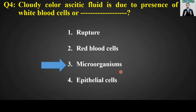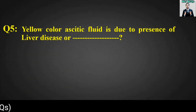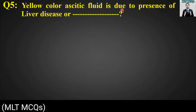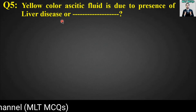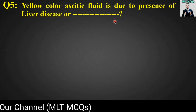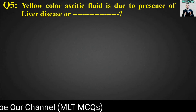The right answer for this MCQ is option number three: microorganisms. Cloudy color of ascitic fluid is due to the presence of white blood cells and microorganisms. MCQ number five is: yellow color ascitic fluid is due to presence of liver disease or blank. Options are: heart attack,